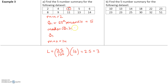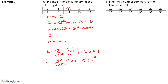The median, or Q2, is the 50th percentile. Using the formula: 50 over 100 times 10 equals 5. When L is a whole number, we take the fifth and sixth data values and average them. The fifth data value is 6 and the sixth data value is 8. So the median equals (6 + 8) divided by 2, which is 14 divided by 2, or 7.